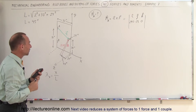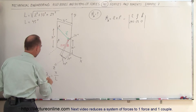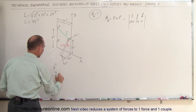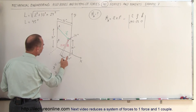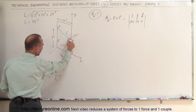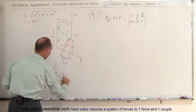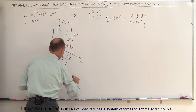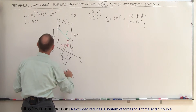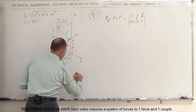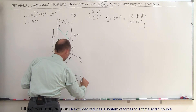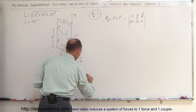So the length of the wood is 45 inches. The direction cosine for X equals 2/45, the direction cosine in the Y direction equals 38/45, and the direction cosine in the Z direction equals 24/45.